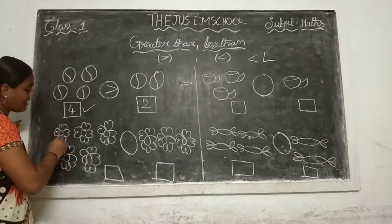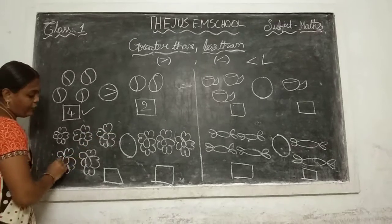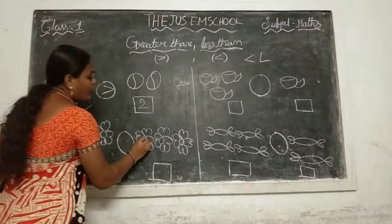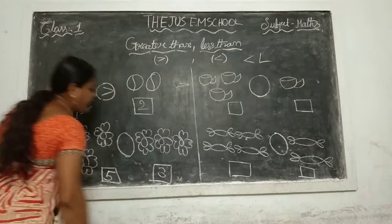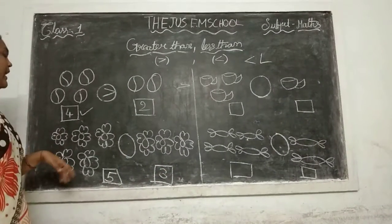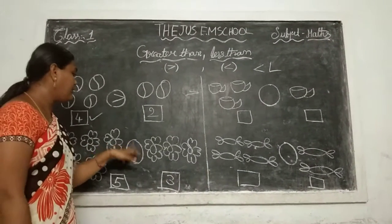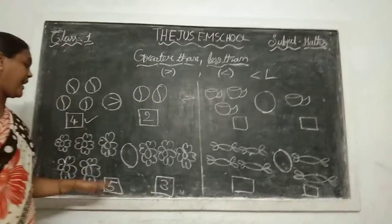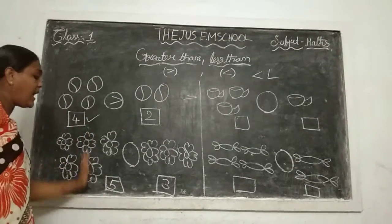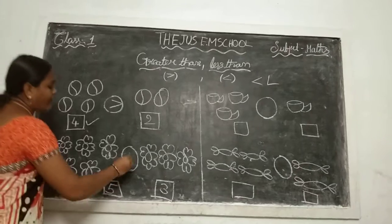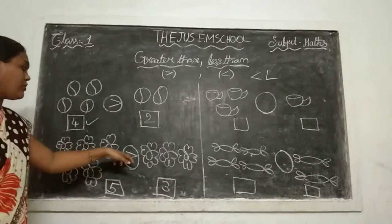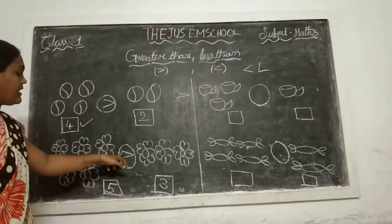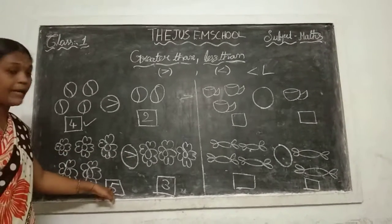How many colors are here? 1, 2, 3, 4 and 5. Write the number 5. And here: 1, 2, 3. Write 3 here. Which number symbol do we put now — greater than or less than? Greater than. Your left side is the big number, so we will put greater than. The mouth is open to the big number side.